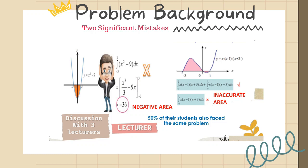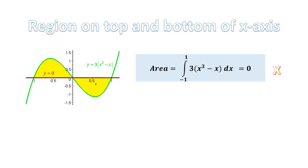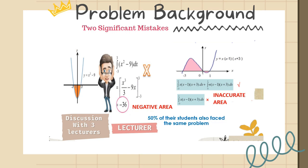Secondly, inaccurate area calculations are another prevalent mistake observed among students. This can stem from errors in setting up the integral formula, choosing the integrands, or evaluating the integral. Addressing these mistakes is crucial to ensure the integrity and correctness of the area calculations between curves. By providing students with clear guidelines and techniques such as the Length Times Width Technique, we can help them avoid these errors and improve the accuracy of their area calculations.